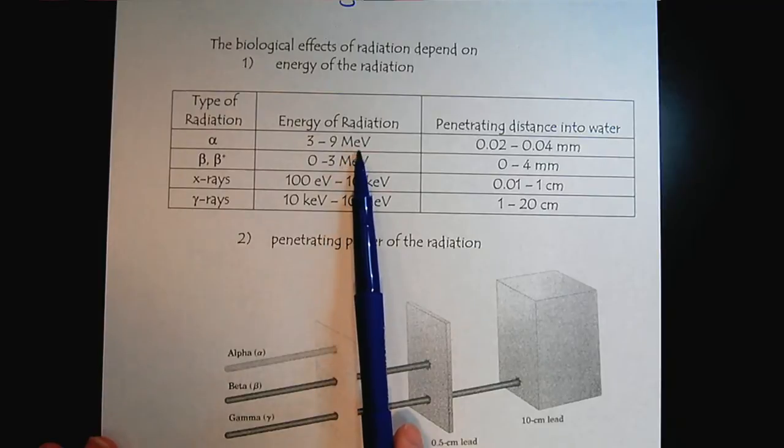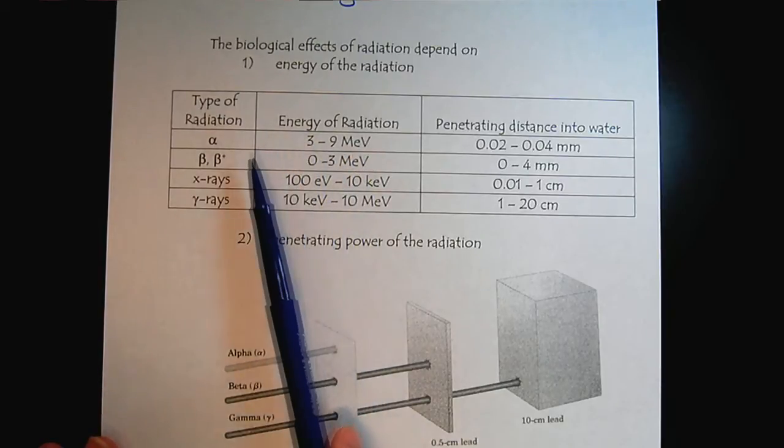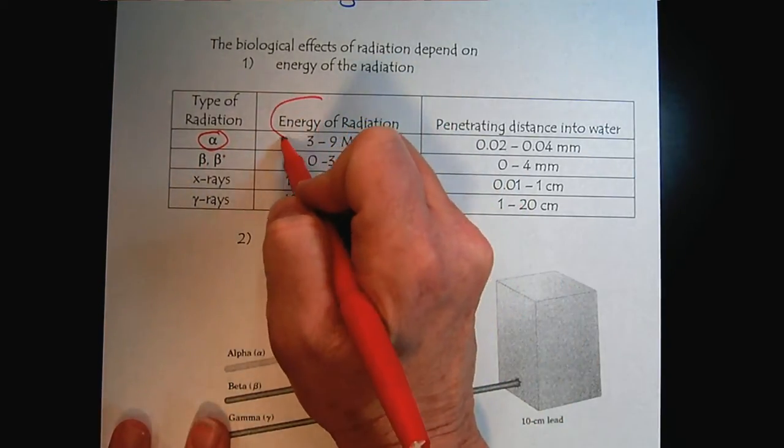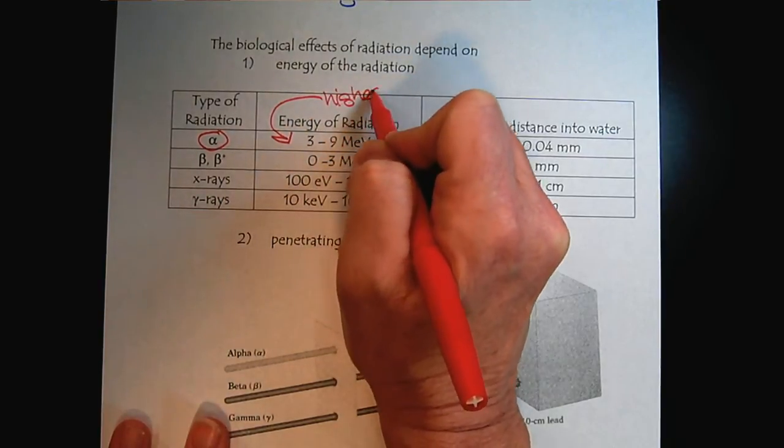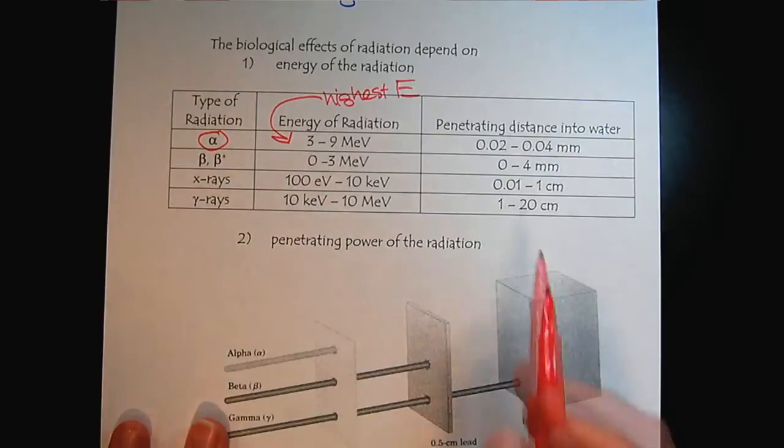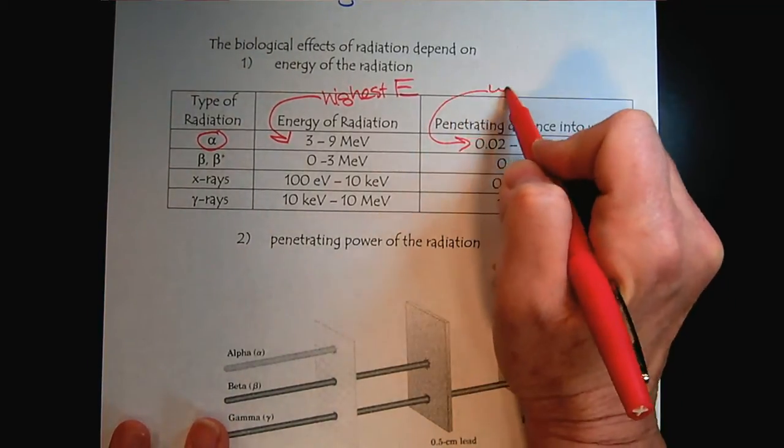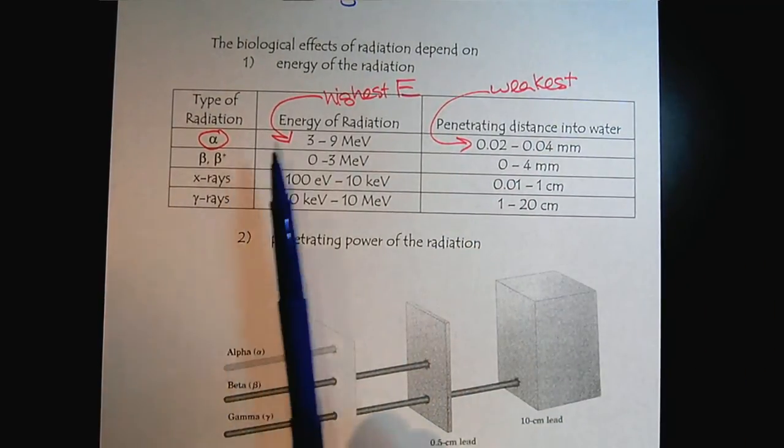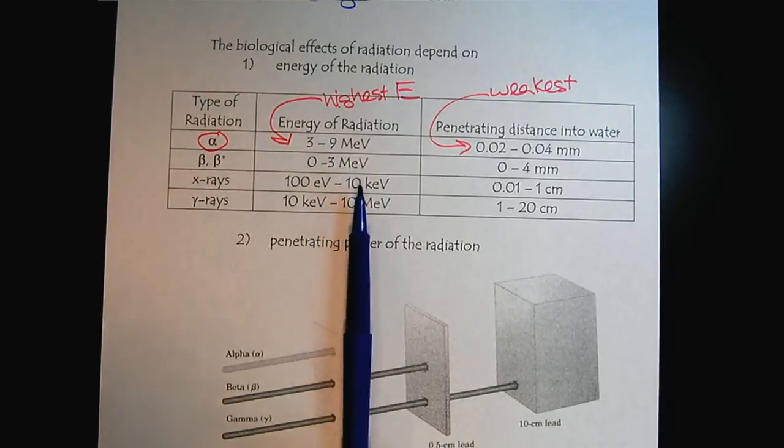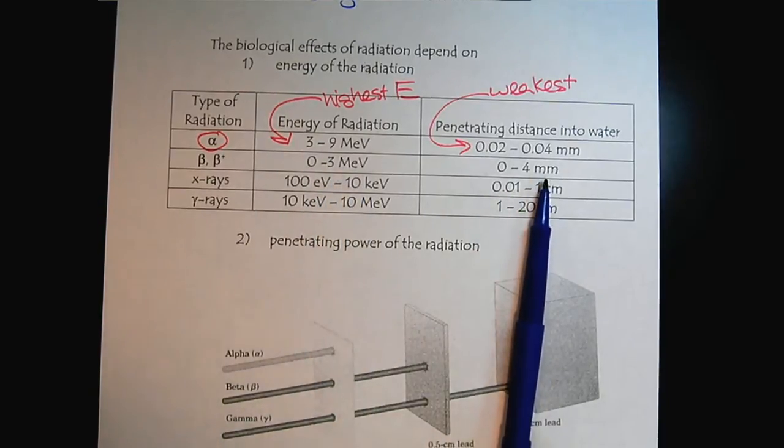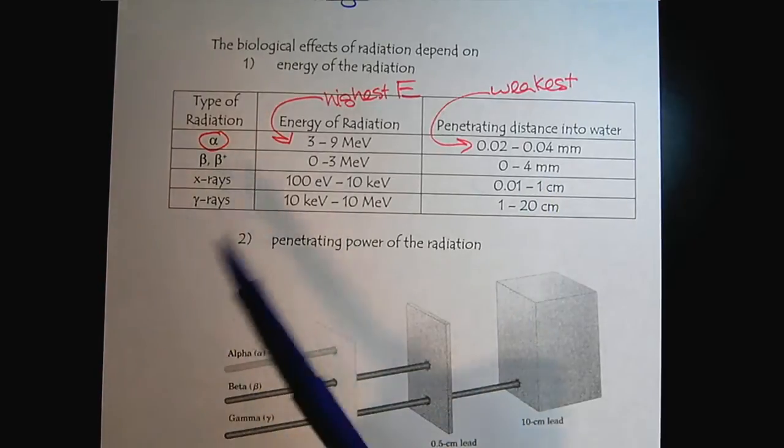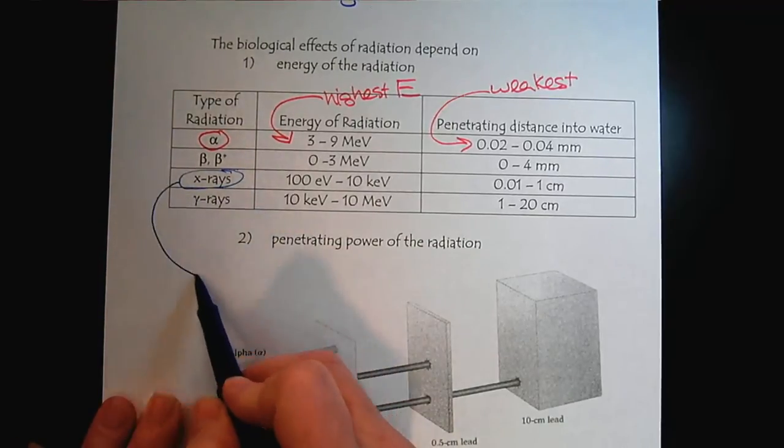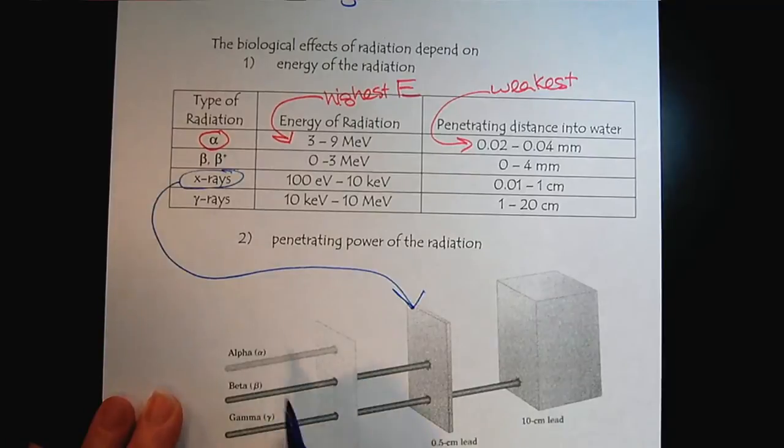Electron volts is just another energy unit. So we see that alphas actually have the highest energy, 5-9 mega electron volts. However, at the same time, they have the weakest penetration, only 0.02-0.04 mm. Then as we look at betas, they have a slightly lower energy capacity and higher penetration.